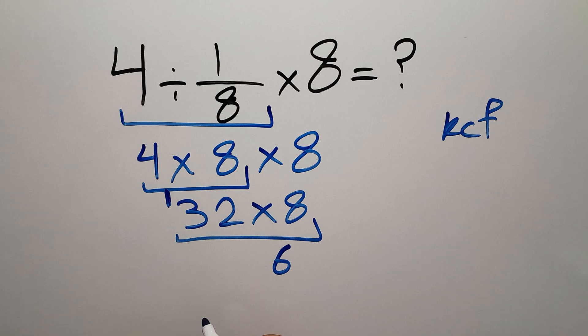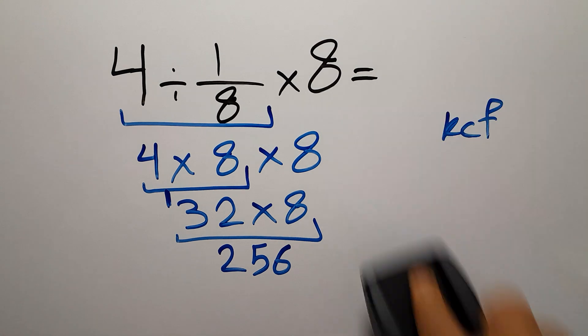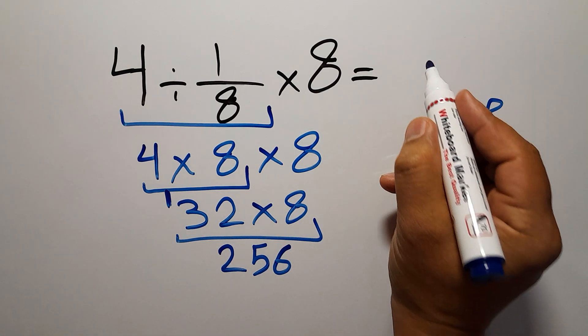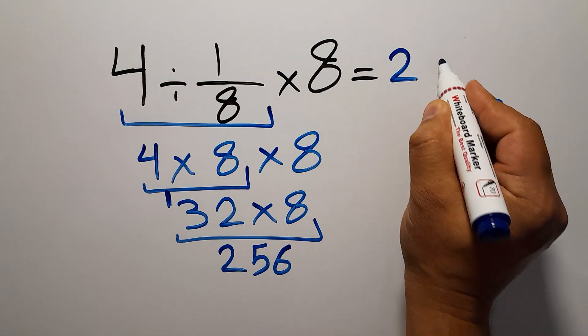And this is equal to: 8 times 2 gives us 16, so we write 6 here and carry 1 here, and 8 times 3 gives us 24, 24 plus 1 equals 25. So our final answer to this problem is 256. The correct answer is 256.